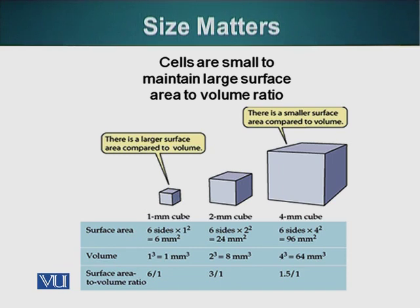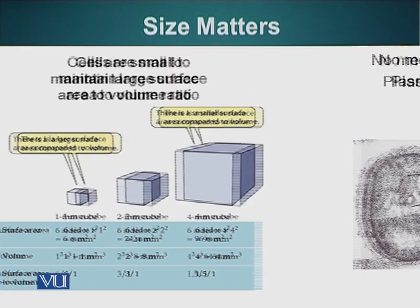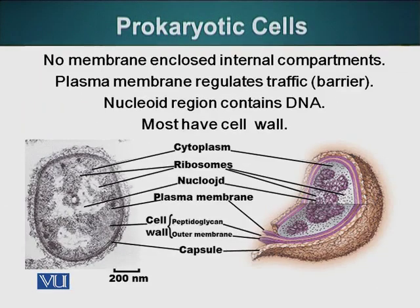So we have seen that as the size increases, the surface area to volume ratio decreases, and that is an impediment for cells to be of a bigger size. Now let's move on and look at the smallest cell — the prokaryotic cell.